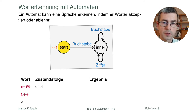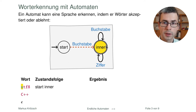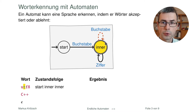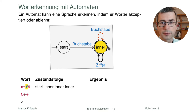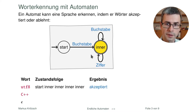Die erste Eingabe ist 'utf8'. Sie beginnt mit einem 'u'. Wenn wir diese verarbeiten wollen, beginnen wir im Startzustand 'start' und lesen das erste Zeichen: 'u' ist ein Buchstabe, also findet der Übergang 'Buchstabe' statt — wir gelangen zum Zustand 'inner'. Das nächste Zeichen ist wieder ein Buchstabe, wir bleiben in 'inner', dann 'f', und zuletzt die Ziffer '8', die auch zu 'inner' zurückführt.